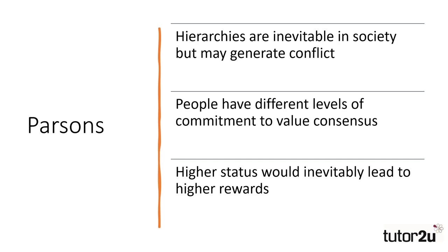Parsons took Durkheim's work and developed it further, looking to establish a functionalist theory of stratification in society. Given the competition for higher positions and status in society, Parsons acknowledged that social class hierarchies would develop conflict, namely because individuals would come into conflict with one another for positions and status. However, Parsons suggested that the stratification of society would become inevitable, as people had different levels of belief in the value consensus. Those who had not been successful in gaining higher status employment would inevitably have less commitment to the shared norms and values, whilst those that were rewarded would reaffirm their commitment to society's value consensus. The more status individuals received in a society, the more invested they became in the value consensus, and so society would become stratified based upon the ability of individuals.